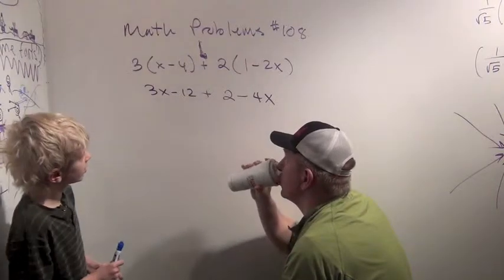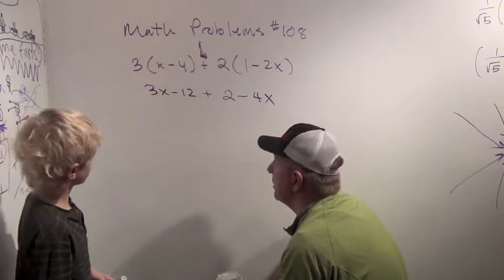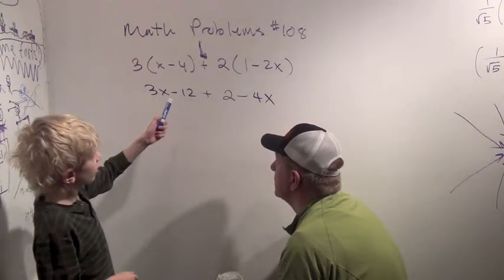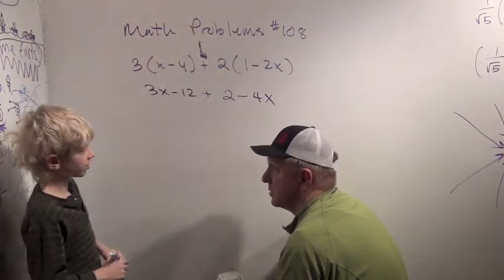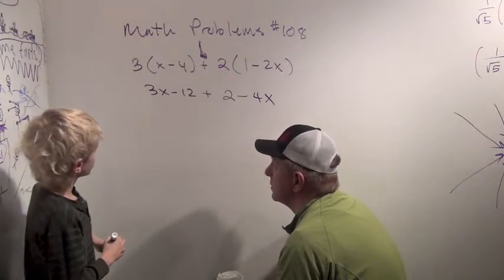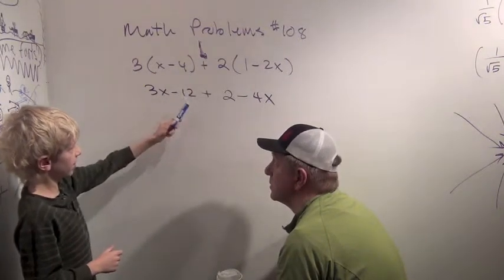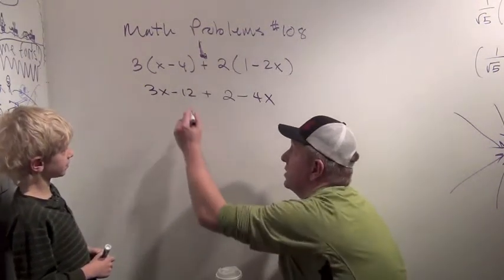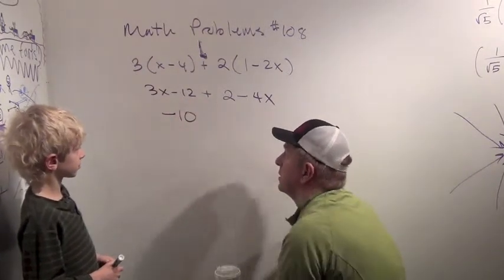Well, we could add the numbers and non-numbers. Okay. So this is minus twelve plus positive two. It's gonna be ten. So, because that's minus, that's gonna be minus ten. Minus ten. Okay. Minus twelve plus two is minus ten. Okay. Minus ten.